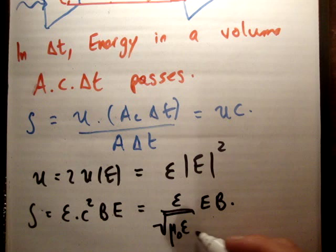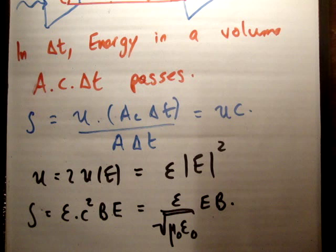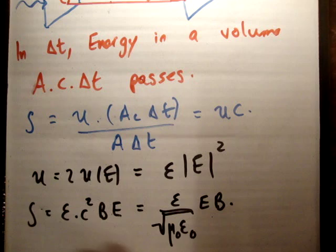That's mu zero, epsilon zero. So epsilon here is a relative permittivity. Permittivity, permeability, I can't remember which, to be honest, I can never remember. But remember, c, the speed of sound, is equal to one over root mu zero epsilon zero, where these are the permeability and permittivity of free space.